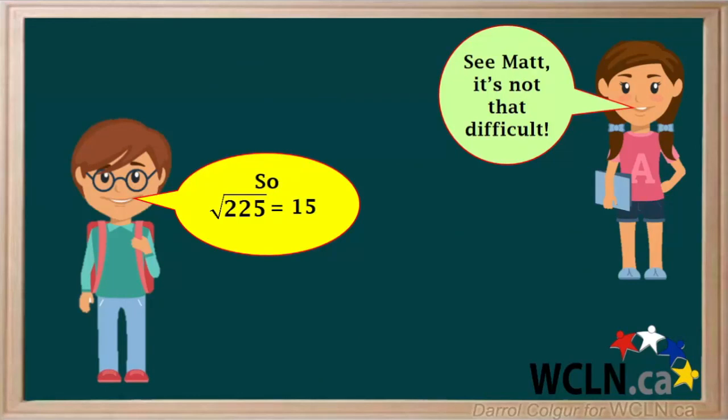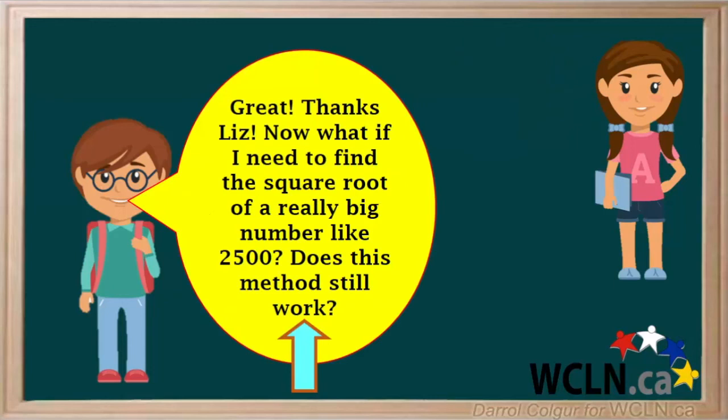Matt now knows that the square root of 225 is 15. But what about really big numbers, like 2500? Can we use this method for these?